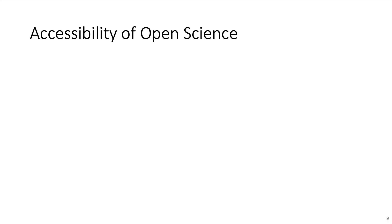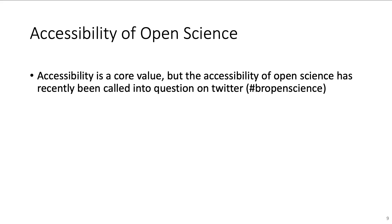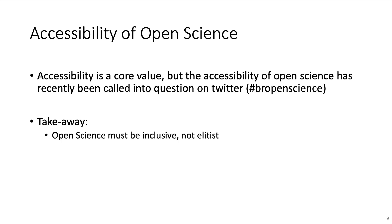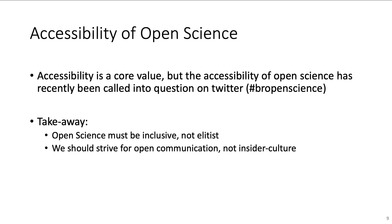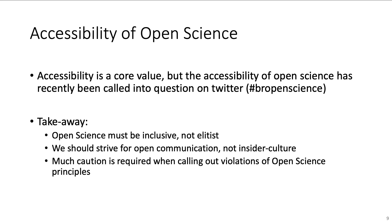Open science should not only be transparent but also accessible. Accessibility, however, has recently been called into question. There are some general takeaways which most people in open science will agree to. Open science should be inclusive, not an elitist insider culture. Rather than calling out violations of open science, we should strive for communication and get as many people on board as possible. Especially for early career researchers, it is usually not the will missing to engage in open science, but the possibilities as well as the support and information. To solve this problem, we should promote constructive approaches like free technical skills trainings.